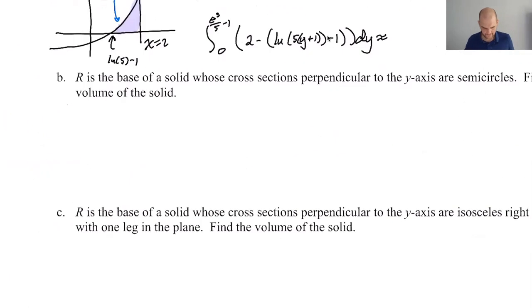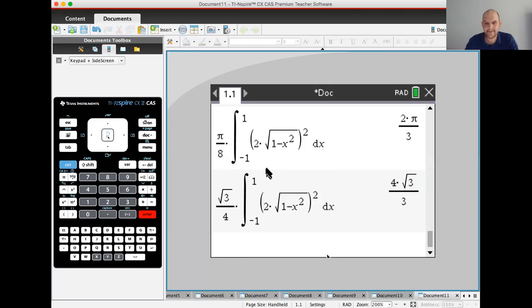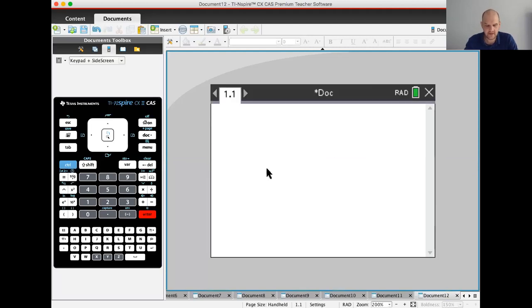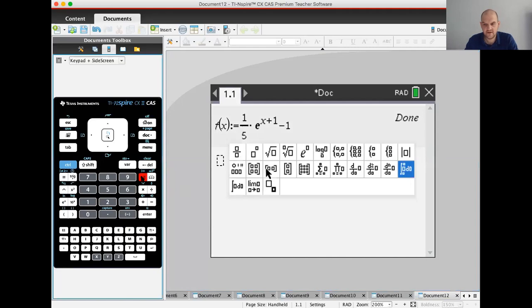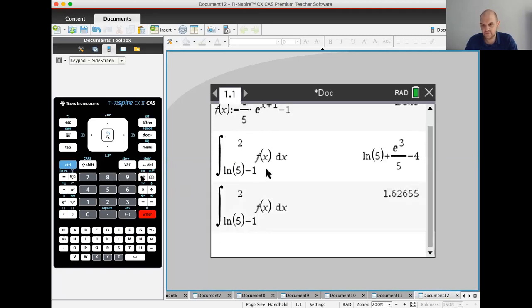All right. That's just straight up area. This is going to be, I don't know. All right. Let's do this. Let's try to do this. Calculator. New document. f of x is 1/5 e to the x plus 1 minus 1. All right. So I'm supposed to do the integral. This is crazy. The integral from natural log of 5 minus 1 to 2 of f of x dx. And you get whatever. 1.627.